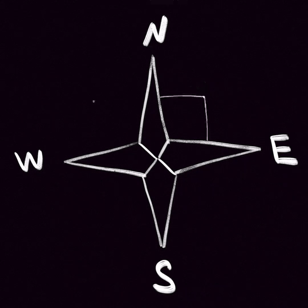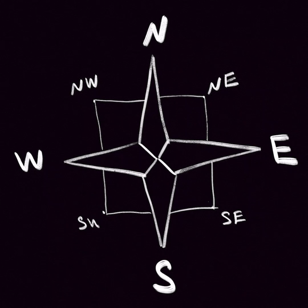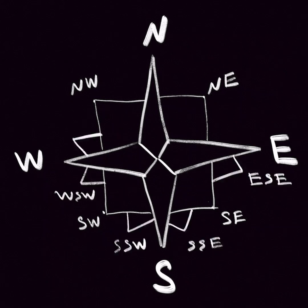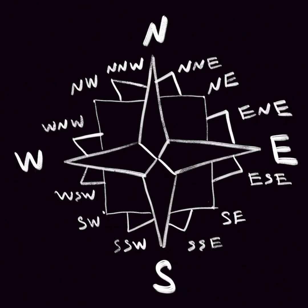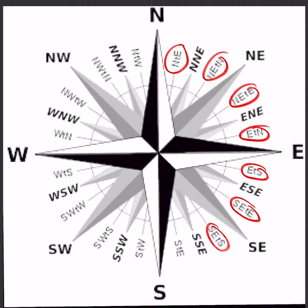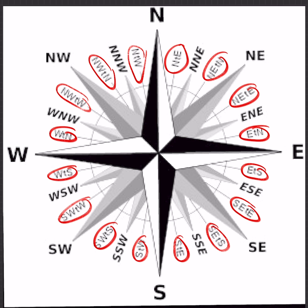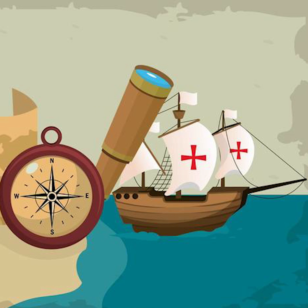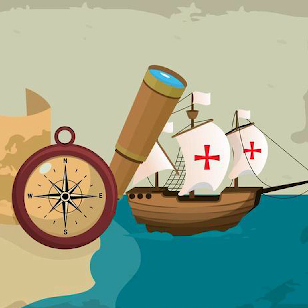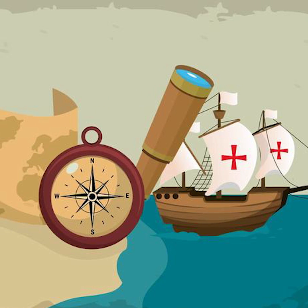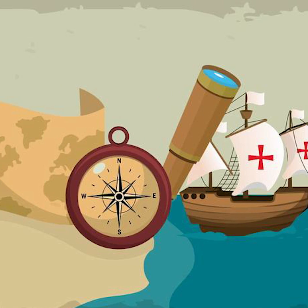And there are four secondary rhumbs: Northeast, Northwest, Southeast, and Southwest. If you want to describe direction more exactly, there is a special set of rhumbs which consist of three letters. And if you want to describe even more exactly, there is a set of rhumbs consisting of four letters. As you might notice, the fewer letters in the name of a rhumb, the more major it is.